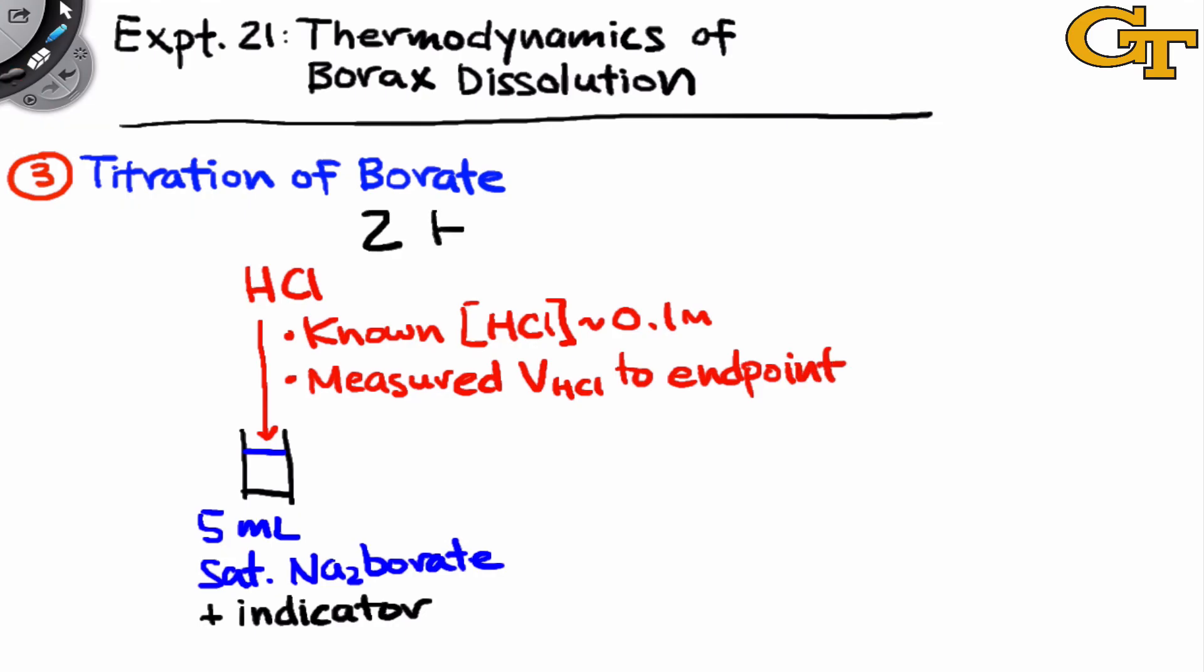The chemical equation here is two moles of HCl react with one mole of sodium borate to form products, and really the intricate details of the products are not necessary. All you need to know is that the products are acidic while the reactants are basic, and as soon as all of the borate is consumed, the indicator will change color. So from the known HCl concentration and VHCl,